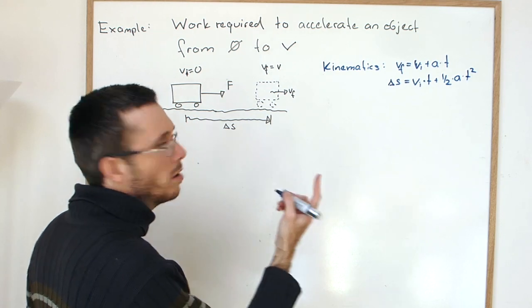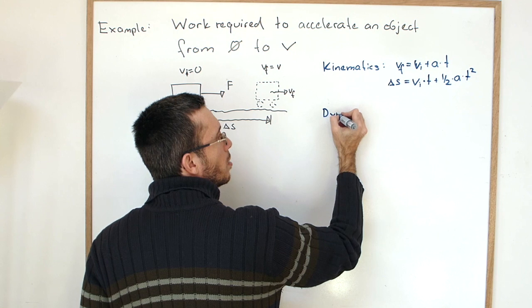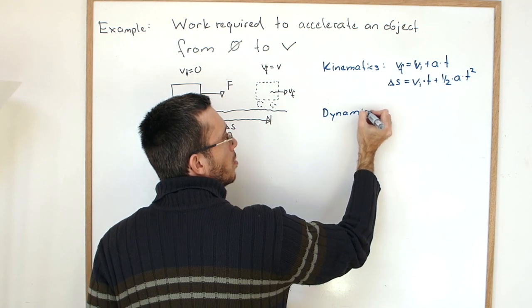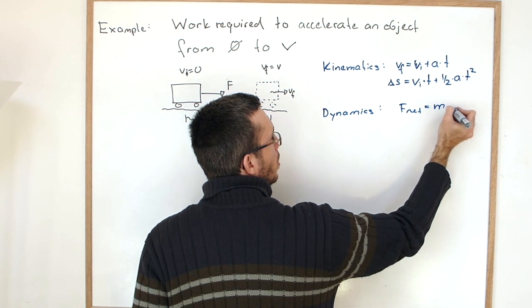Then what else do we know? We know from Newton's laws of motion, from dynamics, we have some F net, which is ma.